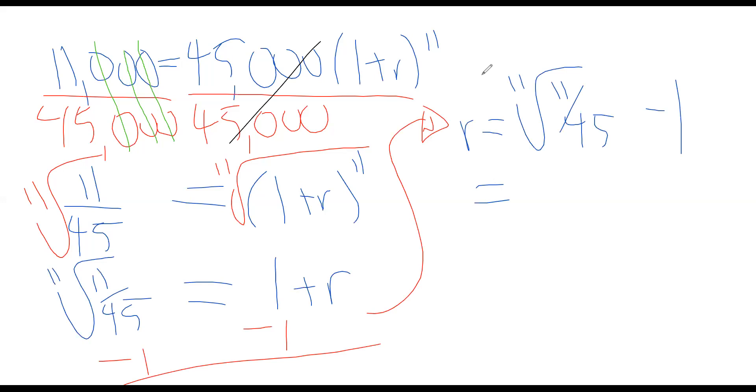Plug that into our calculator here. And we end up with negative 0.1202, which converts to negative 12.02%. So it looks like the value of the car is going down by 12.02% every year.